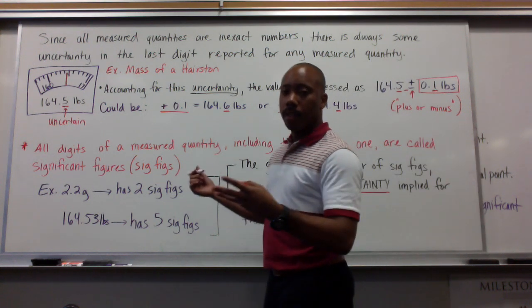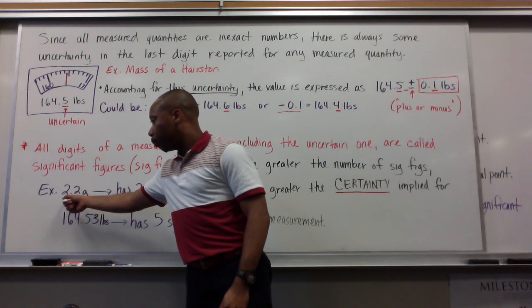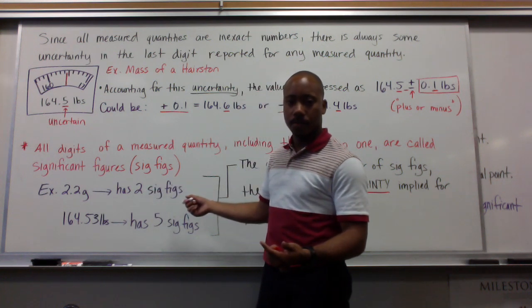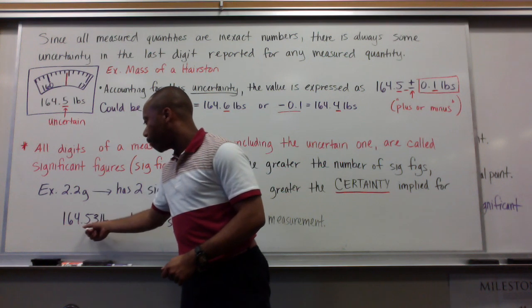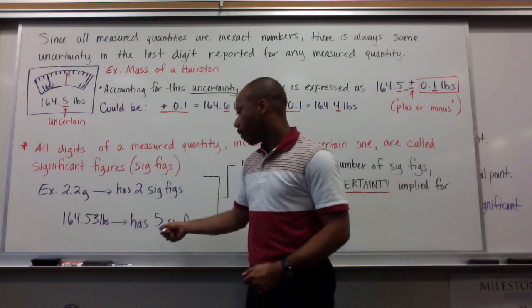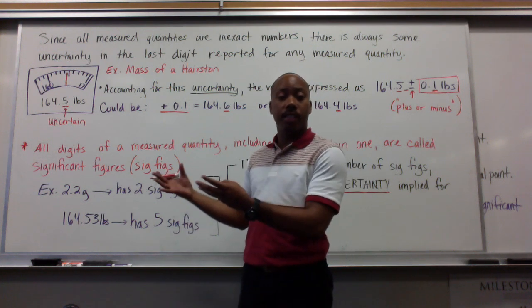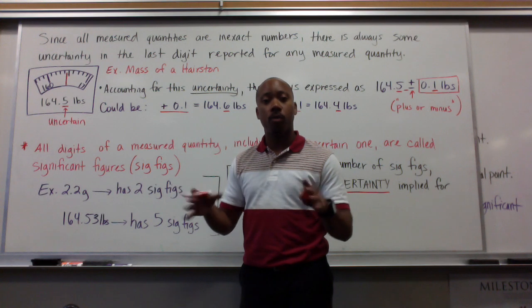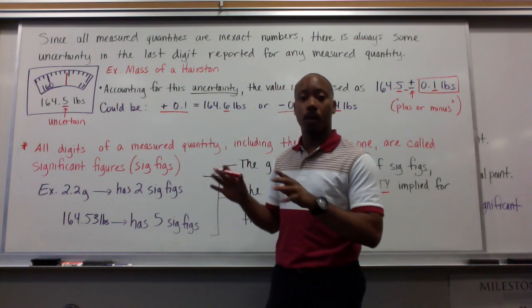Now, here's an example. If I have a measured quantity of 2.2 grams, this would have two significant figures. If I had a measured quantity of 164.53 pounds, this would have five significant figures. Right now, it looks like we're just counting the digits and then saying that's how many significant figures we have. For now, we'll say that. Just for now. Next, the next board, we won't say that anymore.